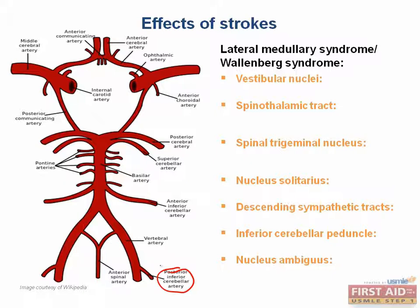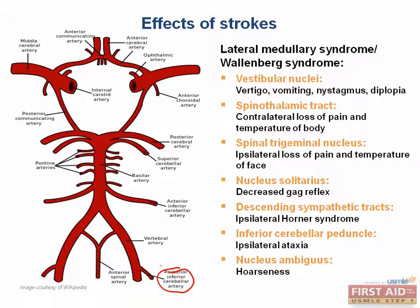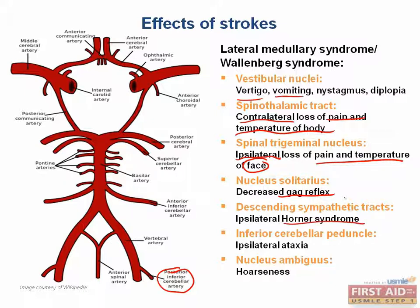What would you expect if all of these different nuclei are lesioned? With the vestibular nuclei, you'd see vertigo, vomiting, and nystagmus. With the spinal thalamic tract, important for pain and temperature, it will be on the contralateral side. The spinal trigeminal nucleus, also for pain and temperature, but this time on the face and ipsilateral. The nucleus solitarius is important for the gag reflex, so you'll have decreased gag reflex. Due to sympathetic tract involvement, you will get Horner syndrome. With the cerebellar peduncle, ataxia makes sense. And lastly, the nucleus ambiguus — you would get hoarseness.